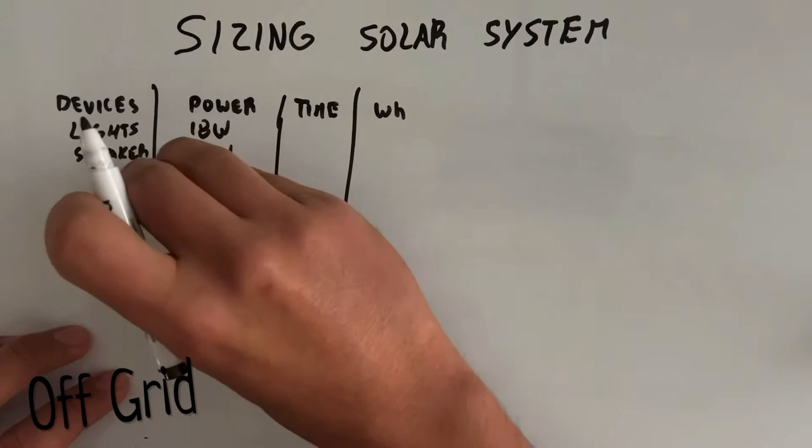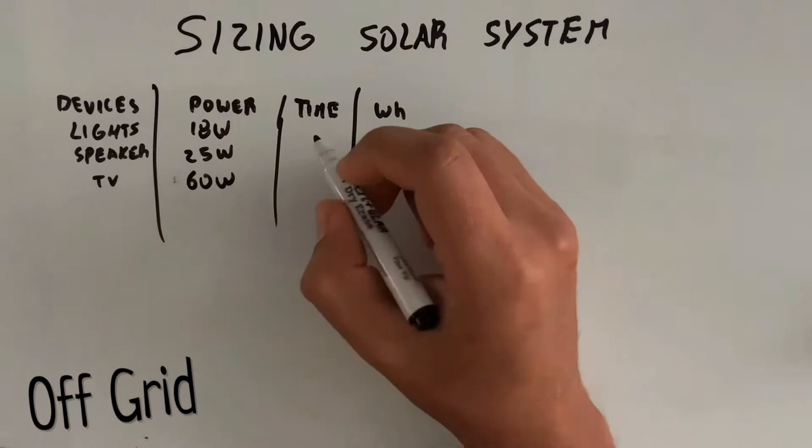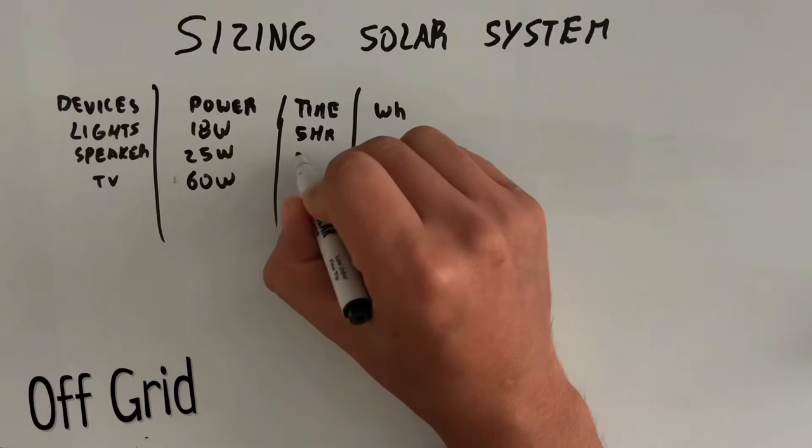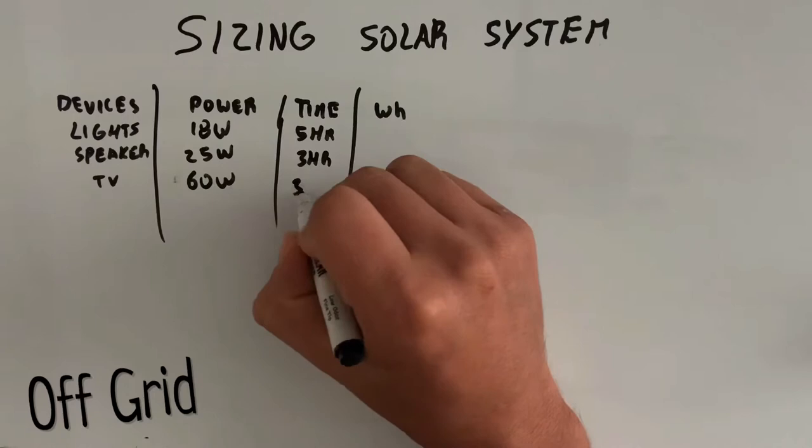After we have the number of the powers, we're going to look at the time. This is how long you want to run the device for, so for my lights, I just want to run it for 5 hours, and the speaker is going to be about 3 hours, and the TV 3 hours as well.